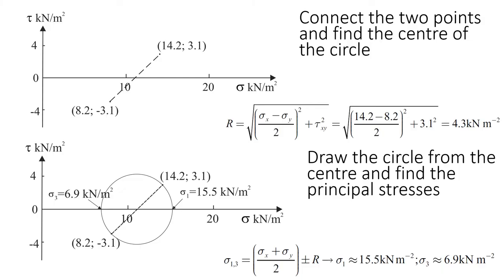The next step is to connect these two points and find the center of the circle. Use a ruler and connect point one to point two. See where the line crosses the sigma axis — that point is going to be the center, labeled C.